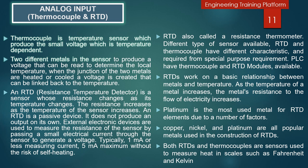RTDs are superior to thermocouples in that their readings are more accurate and more repeatable. Repeatable means that measuring the same temperature produces the same result over multiple trials. RTDs producing more repeatable readings means their readings are more stable, and their design ensures that RTDs continue producing stable readings longer than thermocouples. Furthermore, RTDs receive cleaner signals and are easier to calibrate. Both RTDs and thermocouples are sensors used to measure heat in scales such as Fahrenheit and Kelvin. In general, thermocouples are cheaper, more durable, and can measure a bigger range of temperatures, while RTDs produce better and more reliable measurements.